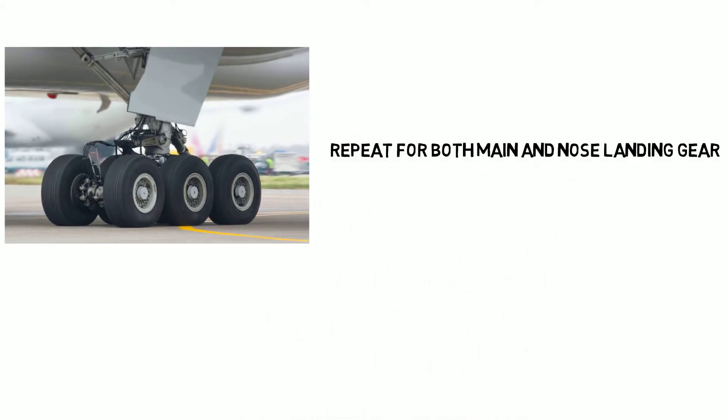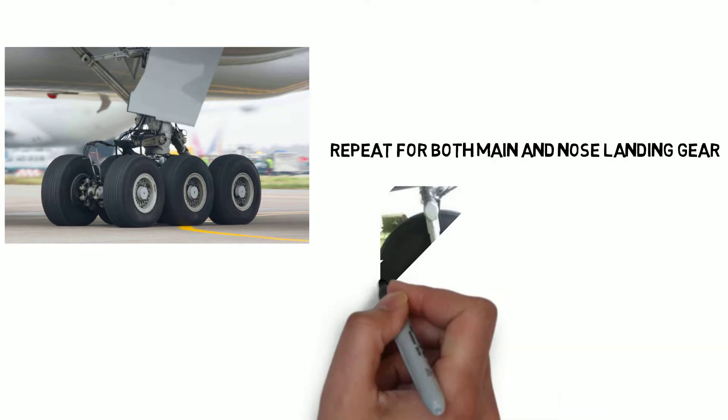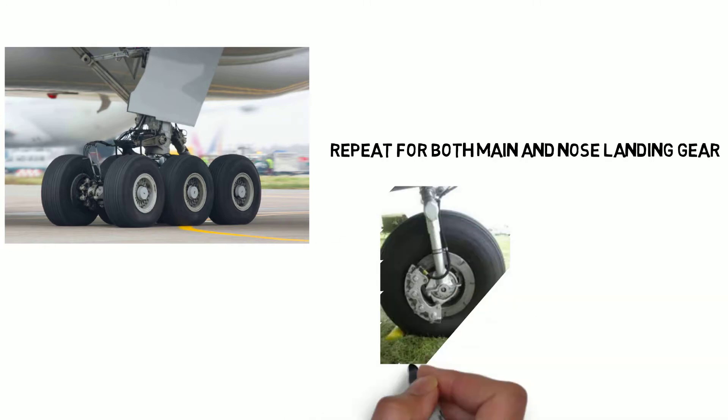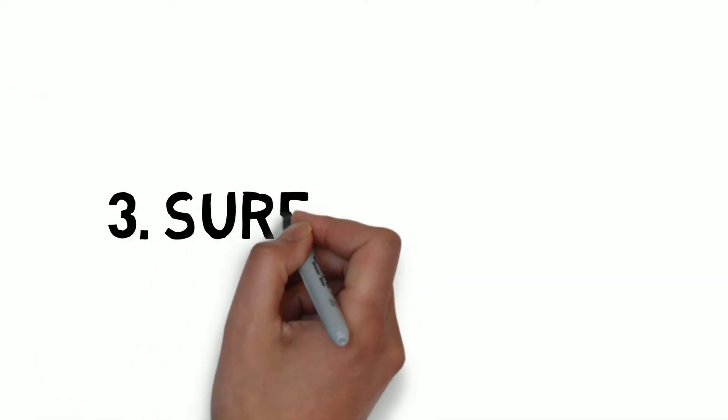Check tire condition, brakes condition, strut for any leakages. Check that every hydraulic line is properly secured. Make sure gear pins are removed. While inspecting main wheel check that APU fire handle is in up condition. After that check for any leakage and its overall condition.